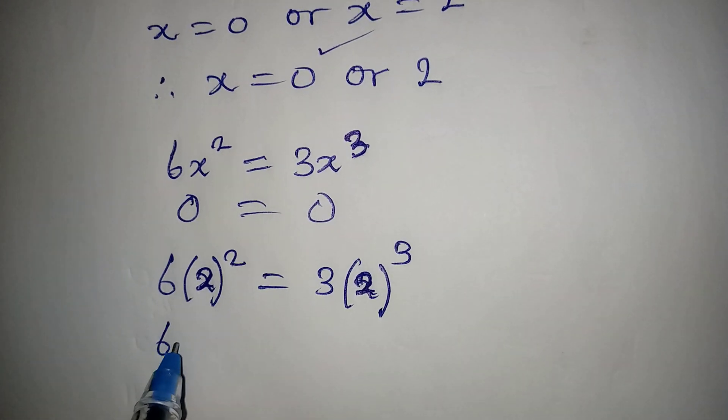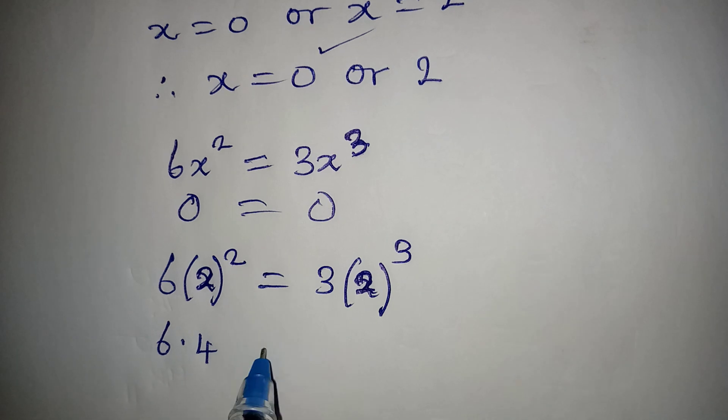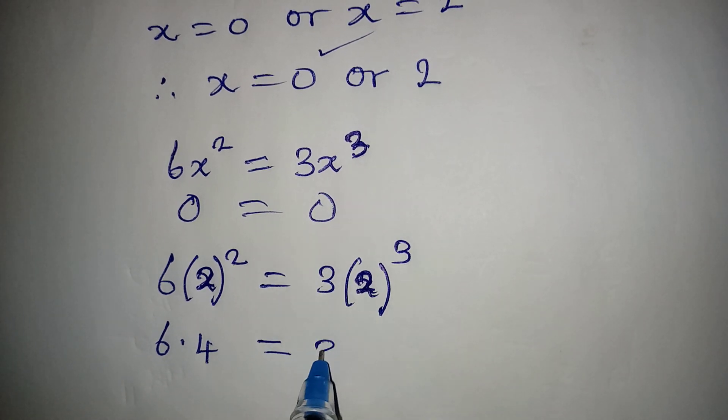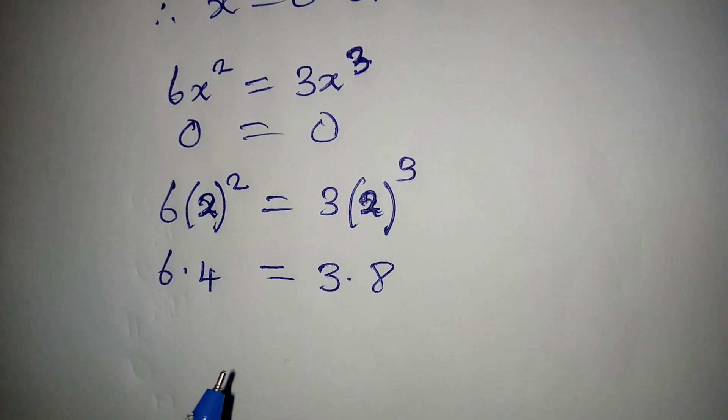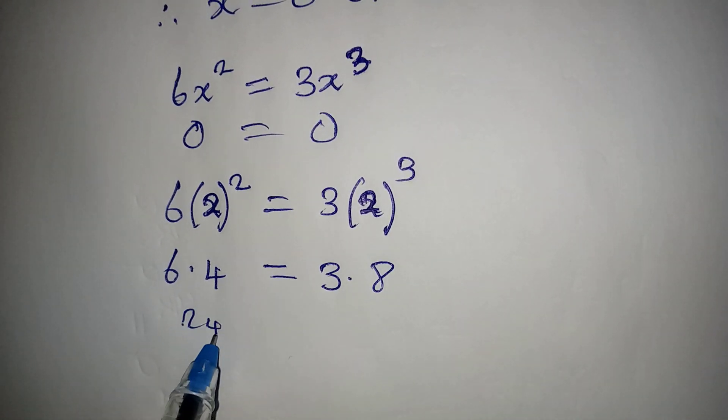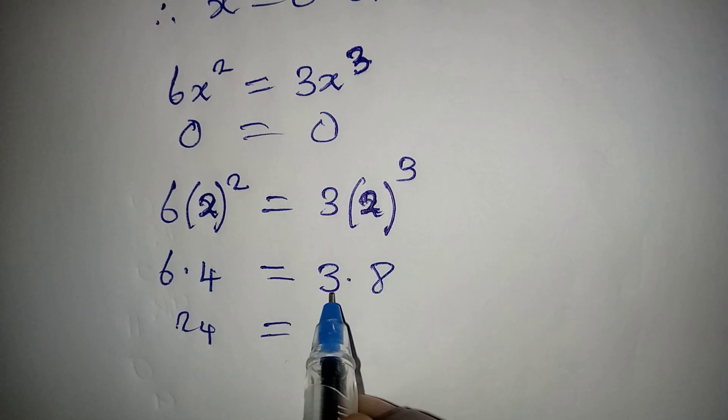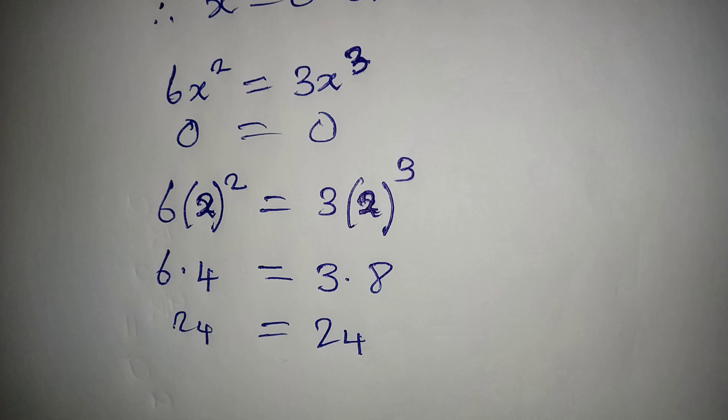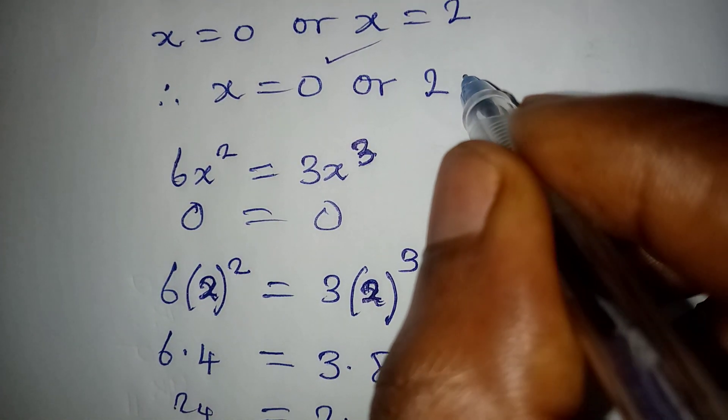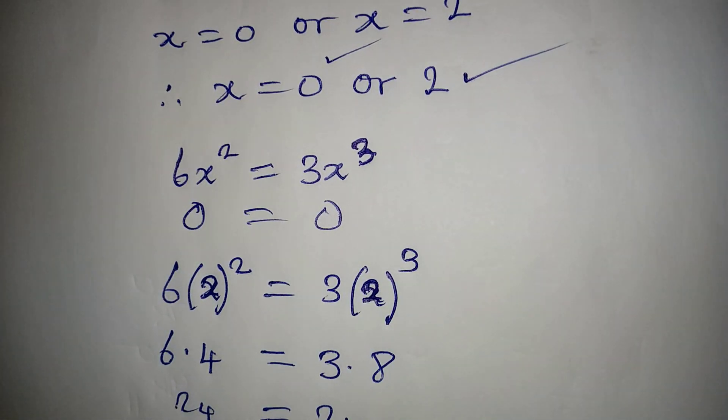Then from here we have 6 multiply by 4 equals 3 multiply by 8, because 2 to the power of 3 is 8. 6 times 4 is 24 and equals 3 times 8 which is still 24. So this confirms that x equals 2 is also satisfying.